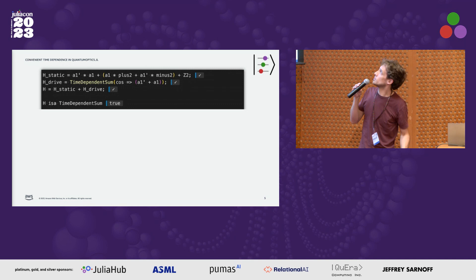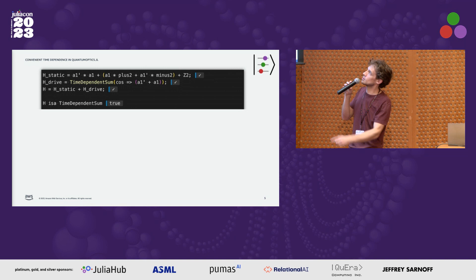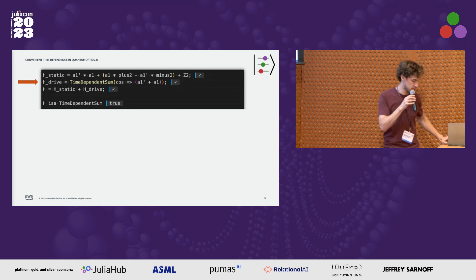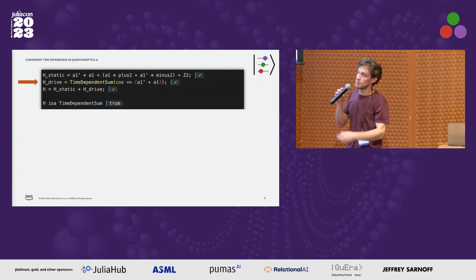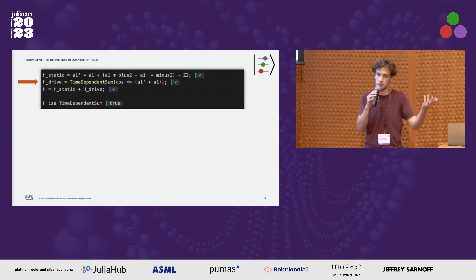That shows up as a time-dependent term in the Hamiltonian. The new feature I wanted to talk about — it's something that QuTiP has actually had for a while, but QuantumOptics.jl hasn't — is a convenient way of representing and abstracting these time-dependent terms. You can see here with H_drive, we're constructing a term with a time-dependent coefficient, which is just the cosine of time in this case. We put in a function as the coefficient for the operator on the right, which is a1-dagger plus a1. We can compose that with the static Hamiltonian just by summing — very simple, very intuitive.